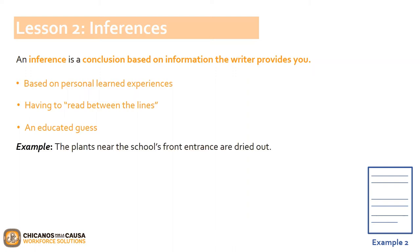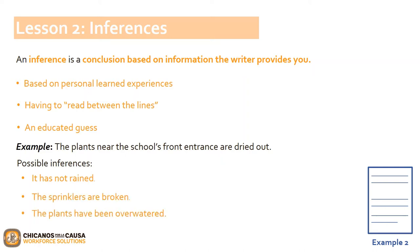For example, the following sentence says: 'The plants near the school's front entrance are dried out.' Possible inferences for the sentence could be: it has not rained; the sprinklers are broken; or the plants have been over-watered. All these inferences could possibly explain why the plants are dried out.